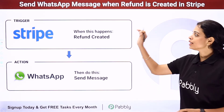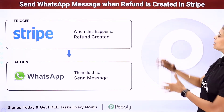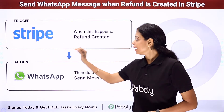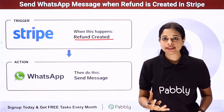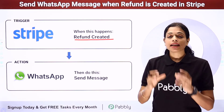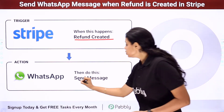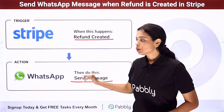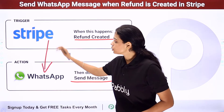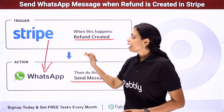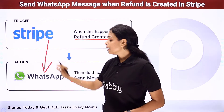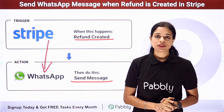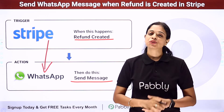In this video, we are going to see how to send a WhatsApp message when a refund is created in Stripe. If you are using Stripe as your payment gateway and you want that every time a refund request is created, the client who requested it should receive a message on WhatsApp, this can be done using Pabbly Connect software. You will have to integrate these two applications — Stripe as the trigger and WhatsApp as the action. Let me take you to my screen.